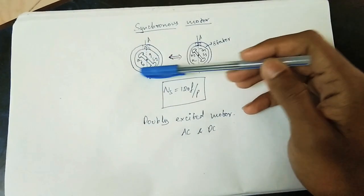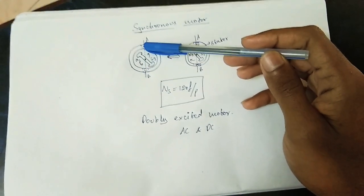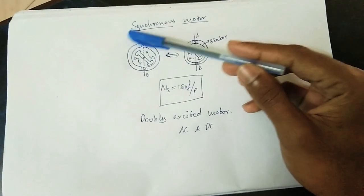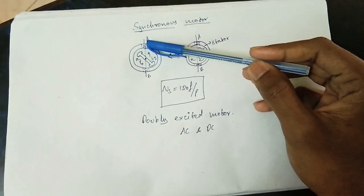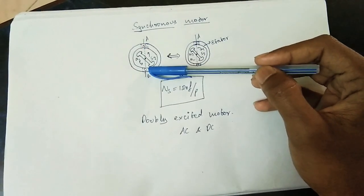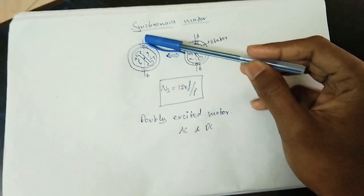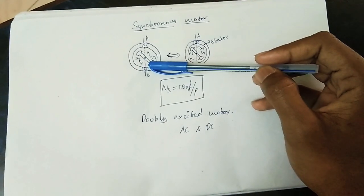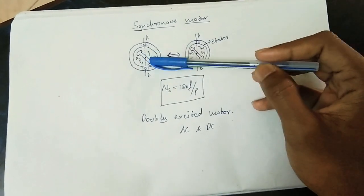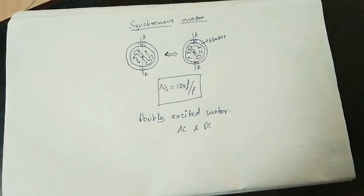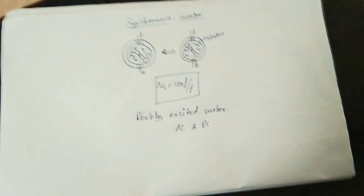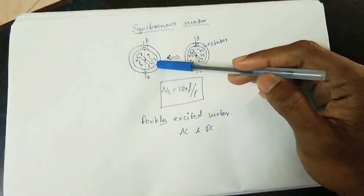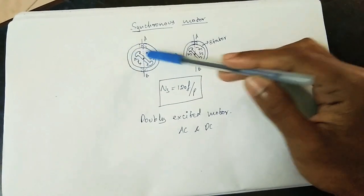Normally, there is an alternating magnetic field. The magnetic field alternates — meaning the north becomes south and south becomes north. The DC supply powers the rotor, which means it has a constant magnetic field.